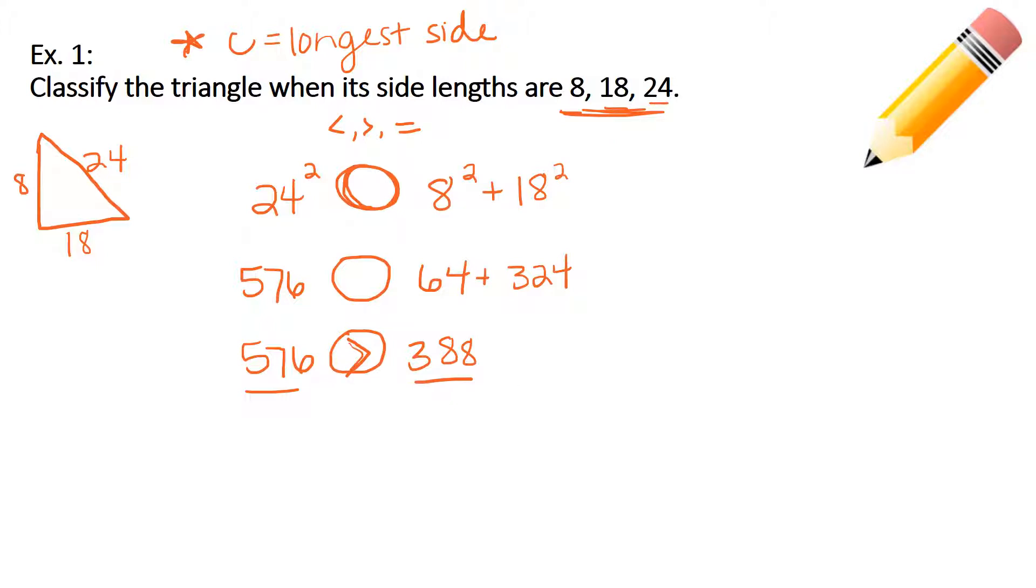So since I drew that greater than sign, this would tell me, since C squared is greater than A squared plus B squared, that means I have an obtuse triangle. All you would really have to write is obtuse. But the way we figure that out is by using those equations from the previous slide.